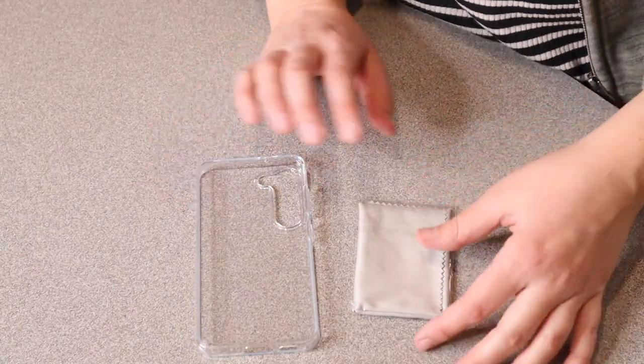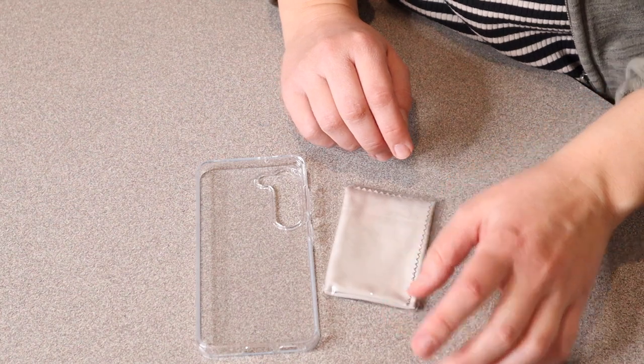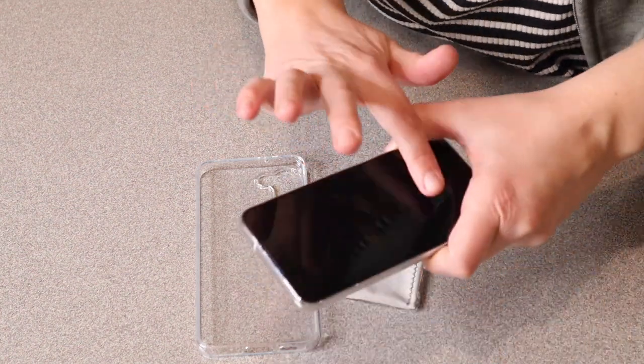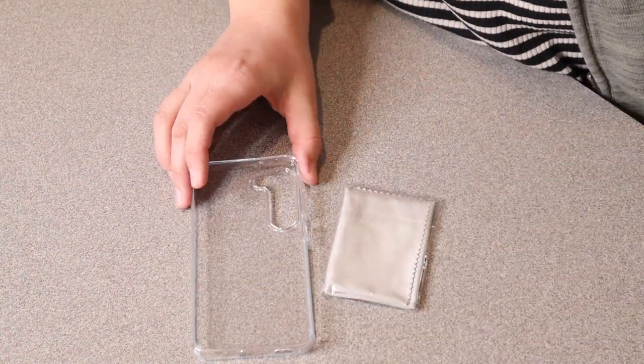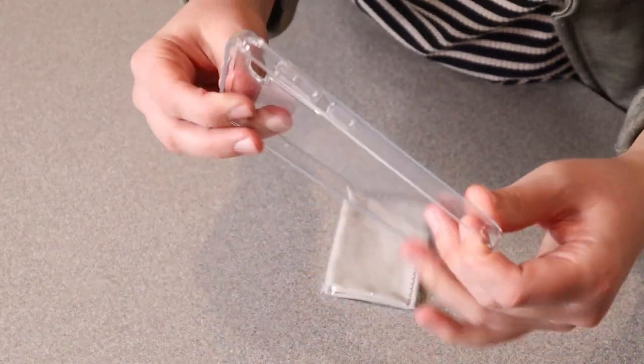This is everything that came inside the box. We have a little cleaning pad here so you can clean the front of your phone, like the screen. And then we have the actual phone case itself.